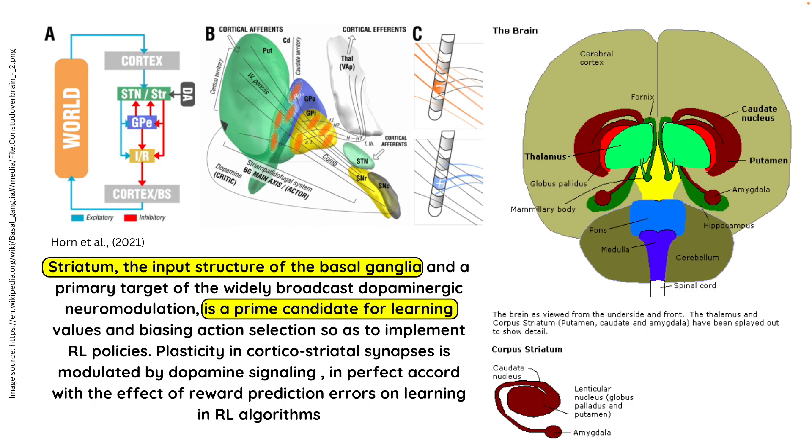The striatum, the input structure of the basal ganglia and a primary target of the widely broadcast dopaminergic neuromodulation, is a prime candidate for learning the values and biasing action selection so as to implement the reinforcement learning policies of reward maximization and punishment minimization. Indeed, plasticity in corticostriatal synapses is modulated by dopamine signaling in perfect accordance with the effect of reward prediction error on learning in reinforcement learning algorithms.